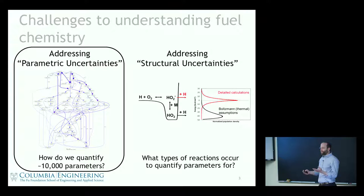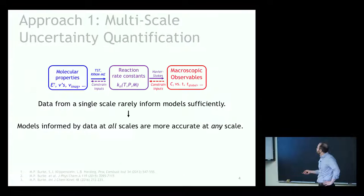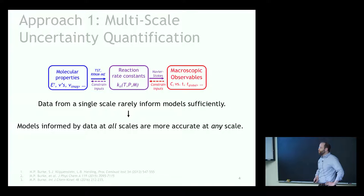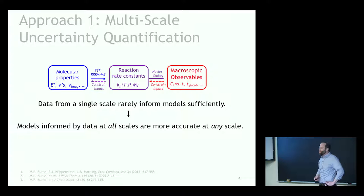For the most part, we don't have a whole lot of data to actually constrain those parameters. One approach we've been taking is a multi-scale uncertainty quantification approach — attacking the problem from both ends. Rather than just using global observables, we've been trying to incorporate basic theoretical foundations so that the optimized results are guaranteed to be physically meaningful. We have results showing we actually learn more about molecular properties than standard first-principles calculations can provide, and they agree with very high-level first-principles calculations, while also getting similar results for the macroscopic observables.